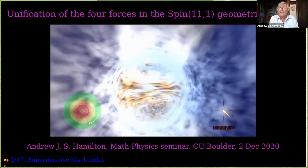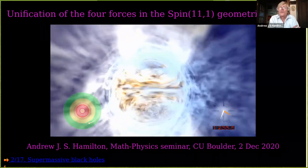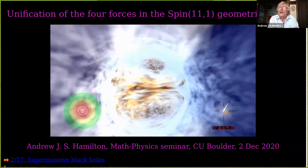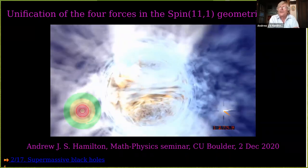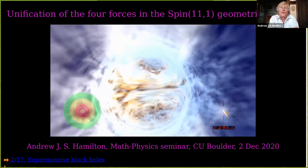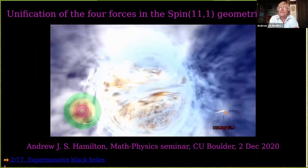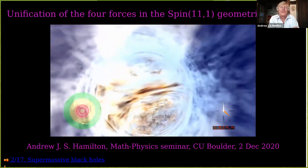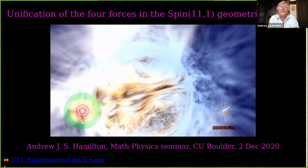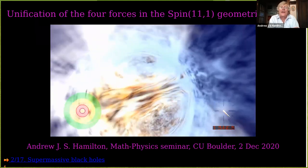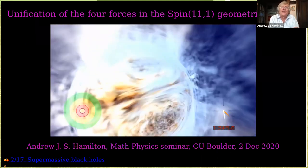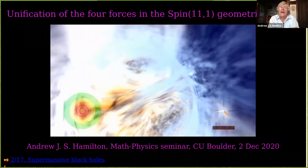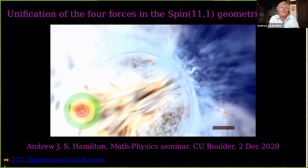The red circle is the event horizon of the black hole — the point of no return. A black hole is a place where space falls faster than light, and the horizon is the place where space is falling at the speed of light. Inside the horizon, space falls faster than light, carrying everything with it.